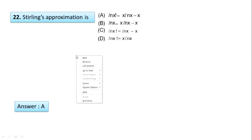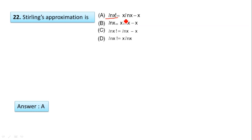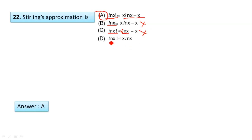Next question 22: Which is Stirling's approximation? The correct form is ln(x!) = x·ln(x) − x. Option A is correct. In option B, there is no factorial — it is simply ln(x), so option B is ruled out. In option C, ln(x!) is present but there is no minus x term, so option C is ruled out. In option D, there is ln(x!) and x·ln(x) but no minus x term, so option D is also ruled out. Hence option A is correct.